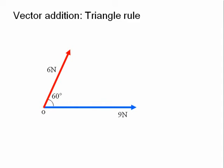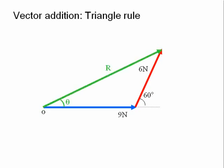It doesn't matter which vector we move across the page. Here we slide the 6N vector across first so that its tail meets the head of the 9N vector, and then drawing the tail of the 9N force to the head of the 6N force, getting the same resultant r as before.